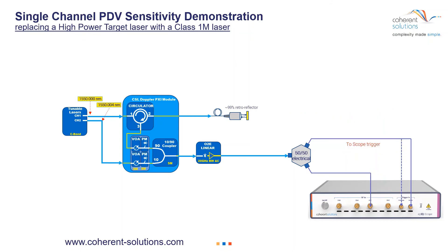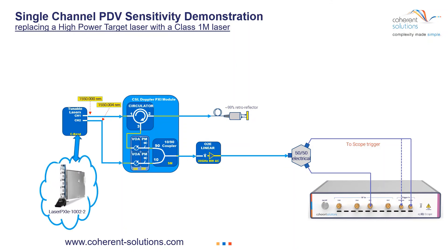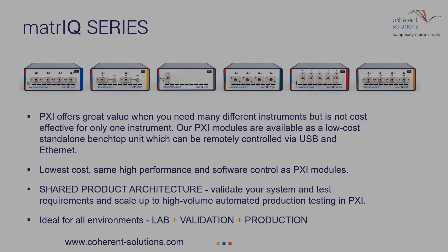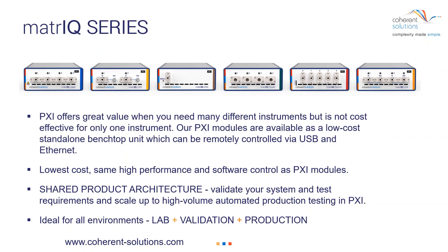If you're curious about the actual nomenclature on the products used in this, the laser is a Laser PXI 1002-2, the Doppler blade is a Doppler PXIE-1001, and the ODE is an O2E PXIE-1101, which is a 25 GHz unit. For smaller systems, you don't have to use PXI — everything available in PXIE is also available in a Matrix series, and the small standalone box is slightly smaller than a cigar box.